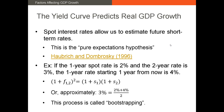If short-term rates increase, that tends to indicate that market conditions are improving — maybe the Fed has had to increase interest rates to control inflation. For example, if the one-year spot rate is 2% and the two-year forward rate is 3%, then the one-year rate starting one year from now has to be about 4%.